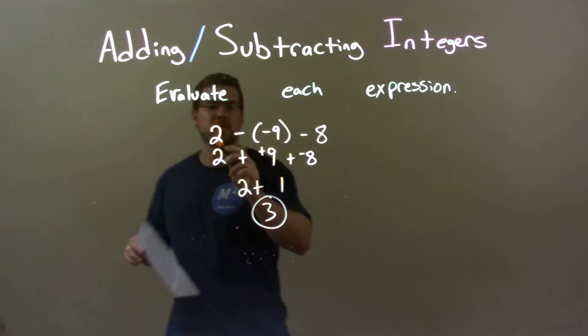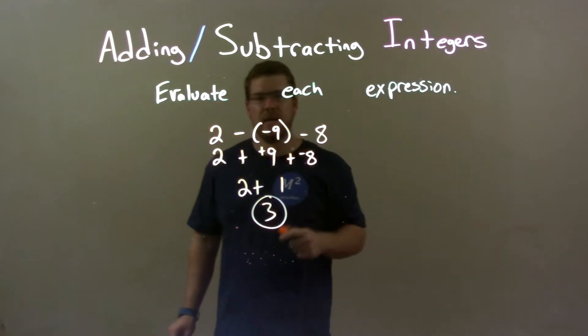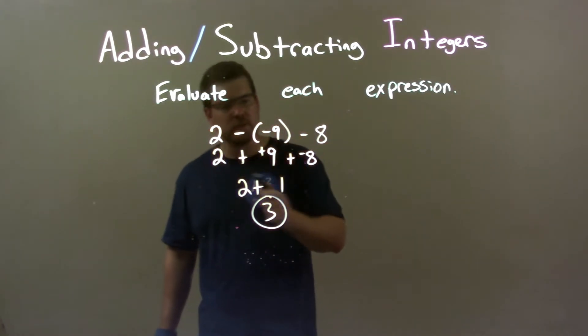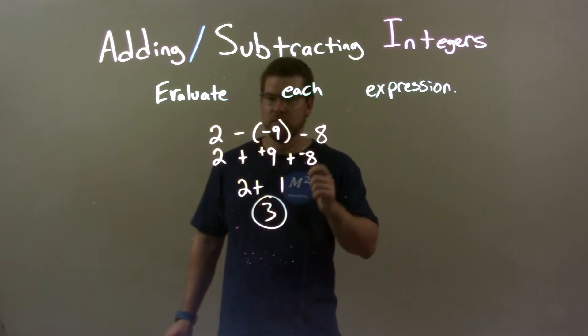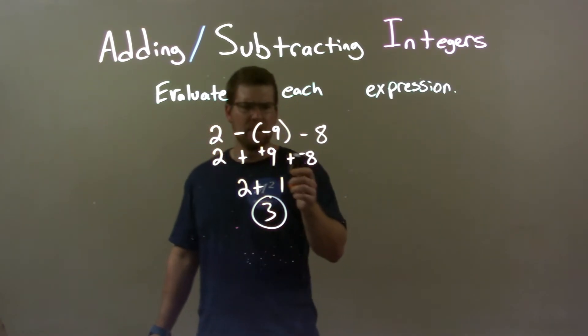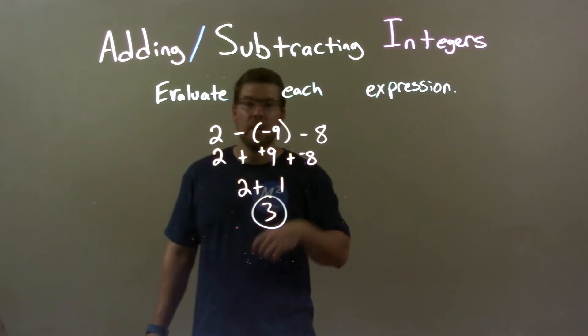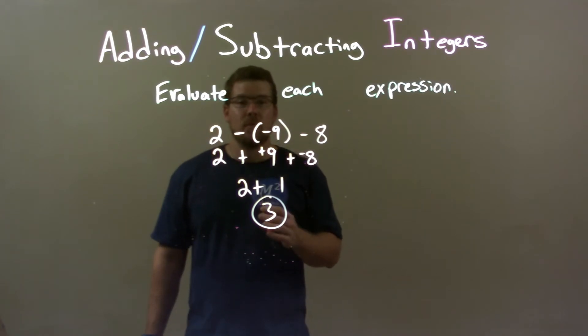So, quick recap. Going from 2 minus negative 9 minus 8, I made all of these to be plus the positives. Then I can see that 9 plus a negative 8, right there—combining those together gives me a positive 1. 2 comes down. 2 plus 1 is 3. Final answer is 3.